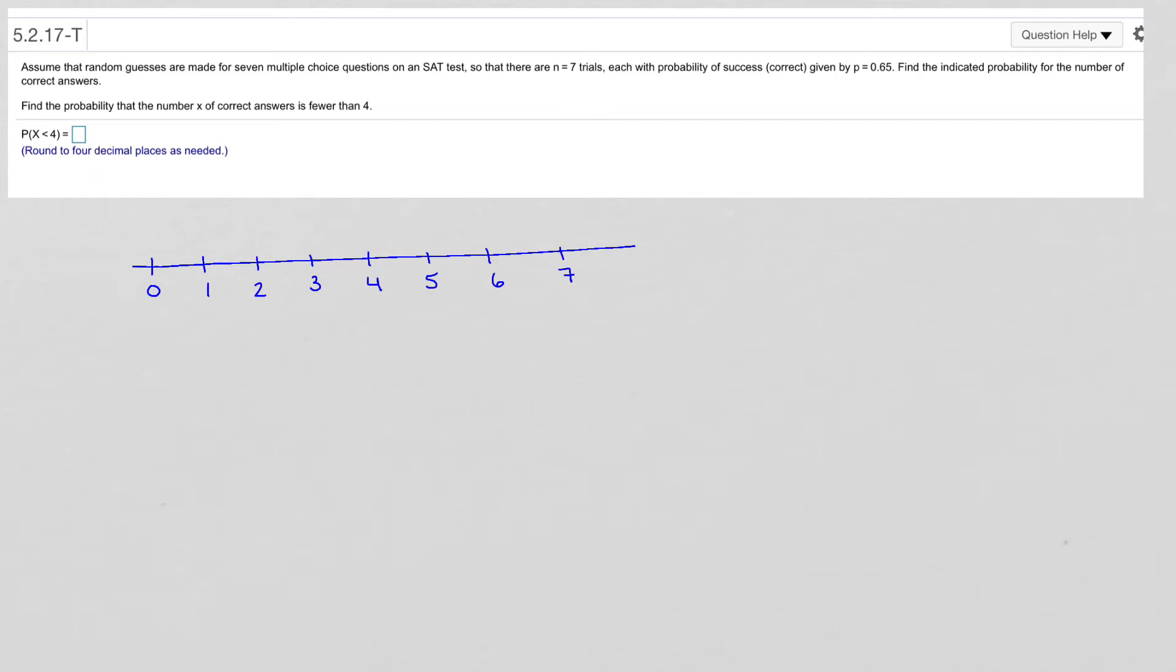So you could have as few as zero correct answers or as many as seven. And in this problem, we want to find the probability that X is less than four. So that includes zero, one, two, and three. So since we're finding the probability that X is less than four, which means the probability of having zero to three successes,